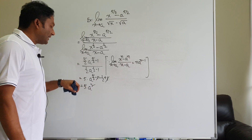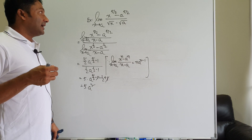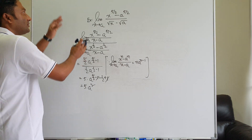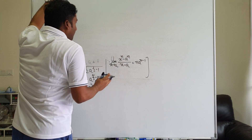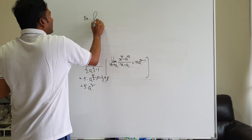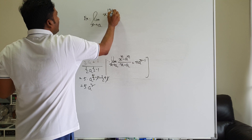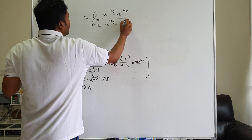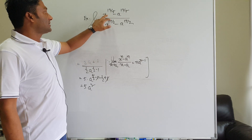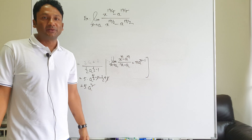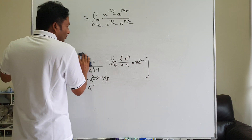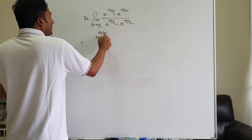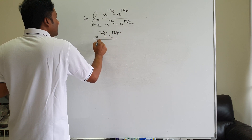If you evaluate the limiting value, you will get 5a squared. Now for the second example: limit x tends to a of x to the power (13/5) minus a to the power (13/5), divided by x to the power (19/2) minus a to the power (19/2). We rewrite this by splitting into x to the power (13/5) minus a to the power (13/5) over x minus a, divided by x to the power (19/2) minus a to the power (19/2) over x minus a.